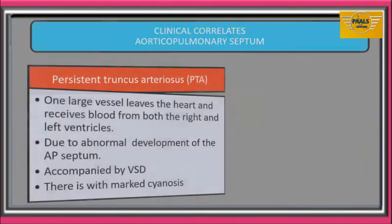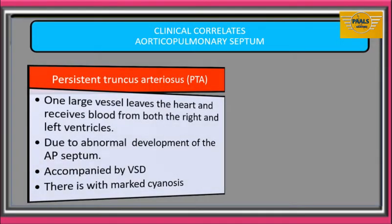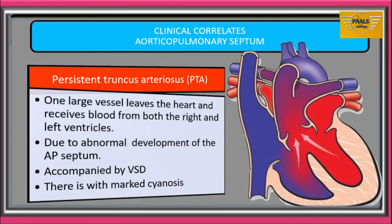The first clinical condition we'll consider will be defects associated with formation of the aorticopulmonary septum. The first we'll look at is persistent truncus arteriosus, PTA. This is a condition in which one large vessel leaves the heart and receives blood from both the right and the left ventricles.